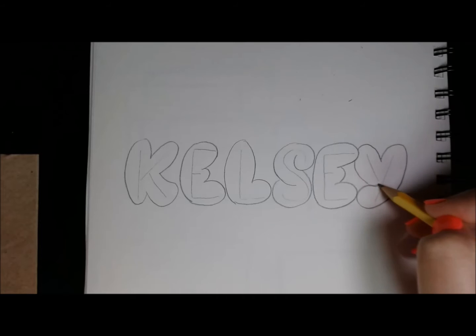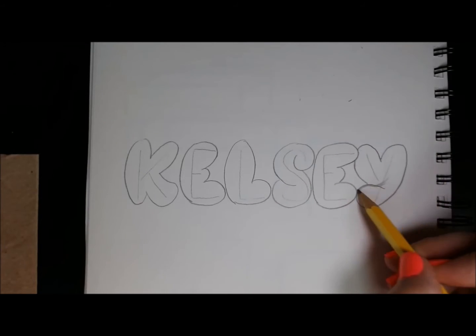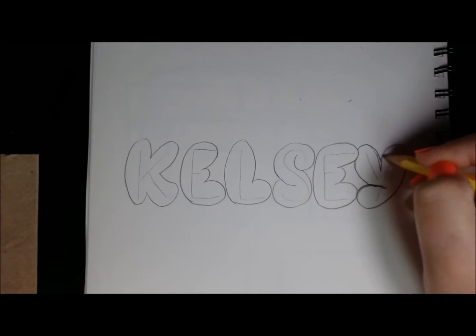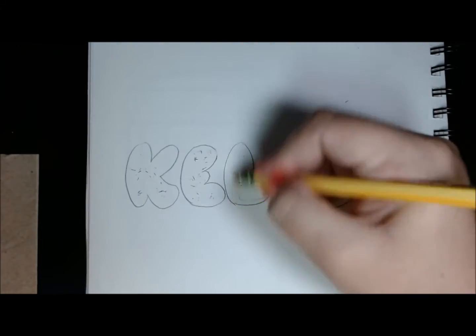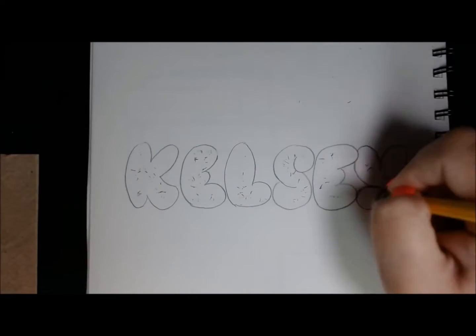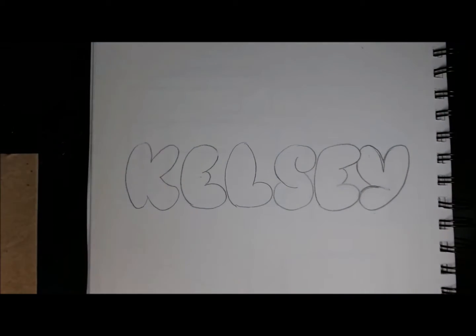And then the Y, if you have a Y in your name, experiment with that shape a little bit. You may not like your first shape and that's why you have an eraser. So erase the middle of your letters. We just want the bubble. We don't need the lines up there anymore.